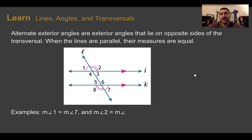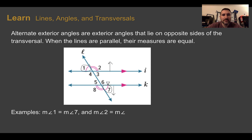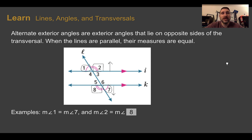Alternate exterior angles follow similar thinking. This time they are exterior — outside the parallel lines — but the ones on opposite sides of the transversal are equal. So angle one equals angle seven, and the measure of angle two equals the measure of angle eight. Knowing these relationships can help us find missing angles since we know each angle equals its pair.